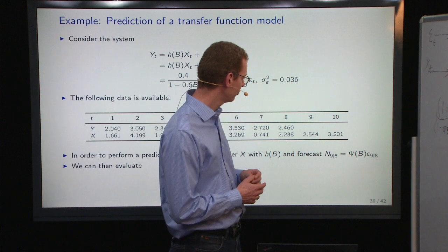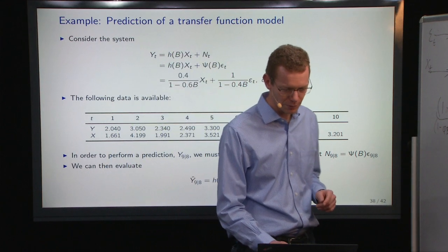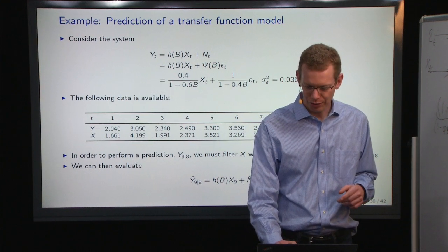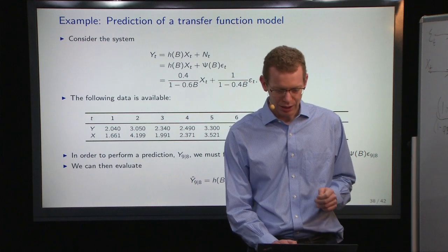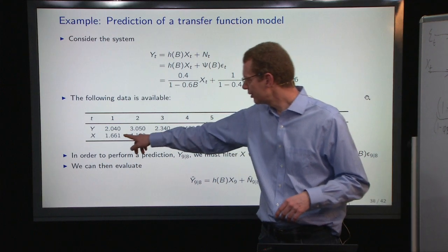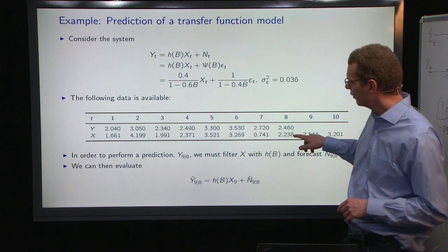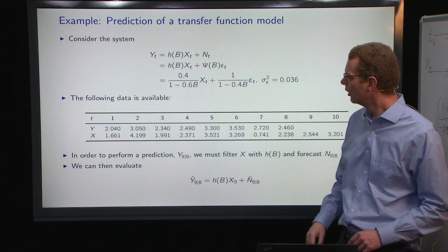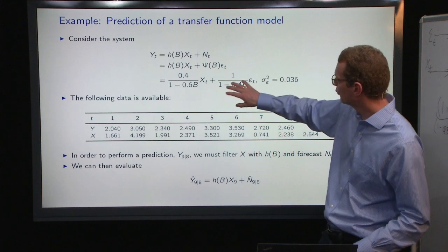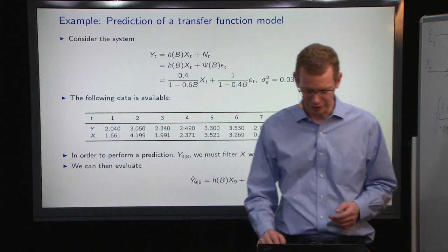Basically, the first thing we need to do is we need to filter to make a prediction of what is Y9 given Y8. And to do that, we first filter X here to say, well, we know the X's, but we need to know the errors as well. So, we need to go through with the filter from X here to get an estimate of what N is, and then we can filter on that as well.